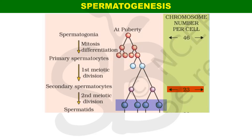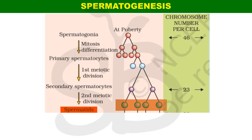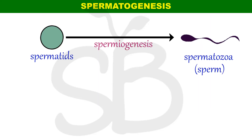Four haploid spermatids are formed from this process. These spermatids are transformed into spermatozoa — the normal cell with sperm shape. The spermatozoa is called the male gamete, also referred to as sperm.